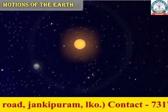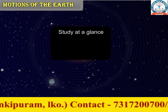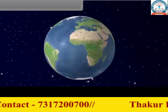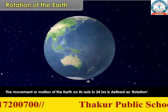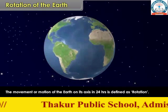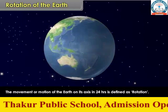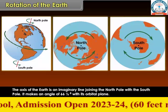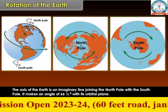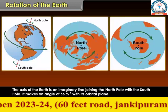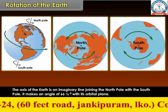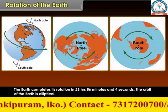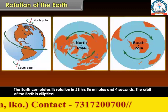Rotation and Revolution. Rotation of the Earth: the movement or motion of the earth on its axis in 24 hours is defined as rotation. The axis of the earth is an imaginary line joining the north pole with the south pole. It makes an angle of 66 and a half degrees with its orbital plane. The earth completes its rotation in 23 hours, 56 minutes and 4 seconds. The orbit of the earth is elliptical.